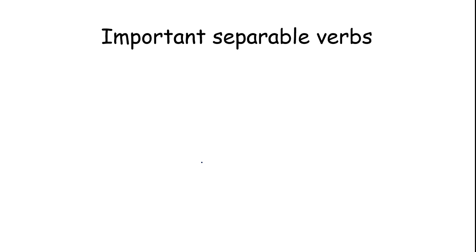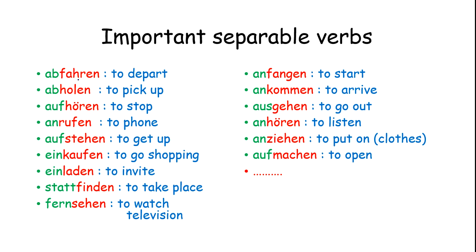Important separable verbs — these are verbs that are normally used and we should learn them: 'abfahren' to depart, 'abholen' to pick up, 'aufhören' to stop, 'anrufen' to call/phone, 'aufstehen' to get up, 'einkaufen' to go shopping, 'einladen' to invite, 'stattfinden' to take place, 'fernsehen' to watch TV. We also have 'anfangen' to start, 'ankommen' to arrive, 'ausgehen' to go out, 'anhören' to listen, 'anziehen' to put on, 'aufmerken' to pay attention. There are many more, but these are the most important separable verbs.